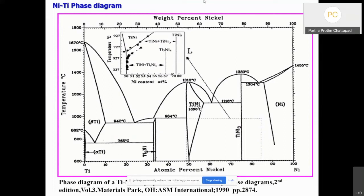Looking at the titanium-nickel phase diagram, an intermetallic phase TiNi, equi-atomic, appears near 50% nickel. We can see that on the nickel-rich side there is some solubility, but on the titanium-rich side the boundary is almost vertical and there is little solubility. The TiNi phase is in equilibrium with an intermetallic Ti₂Ni.